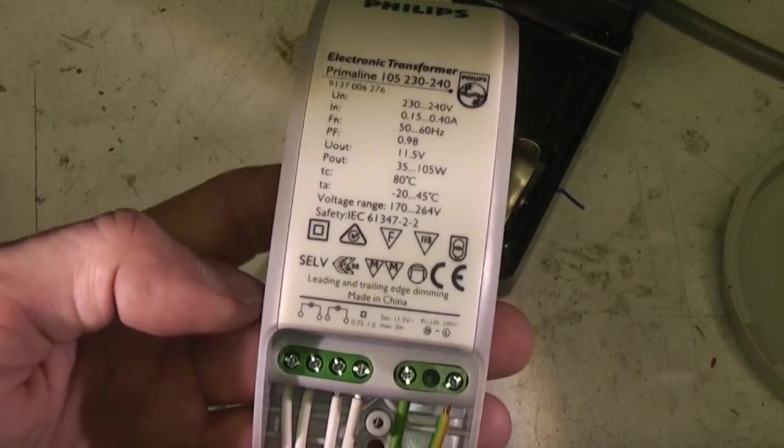The other issue is that these need to be dimmable. And this actually says on here, leading and trailing edge dimming. And this refers to triac type phase angle dimmers. And obviously the electronic conversion process has to give a reasonable dimming of the output as the input voltage is dimmed. So you can use standard dimmers.